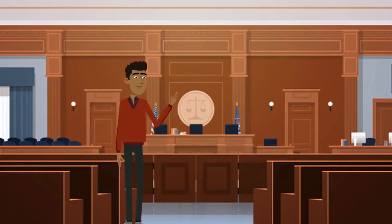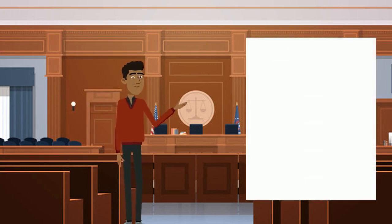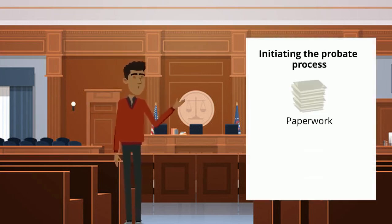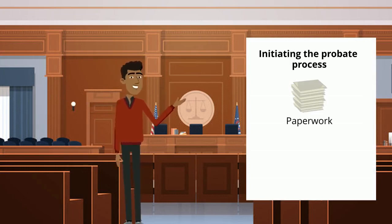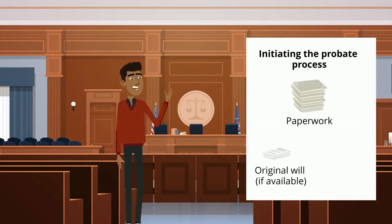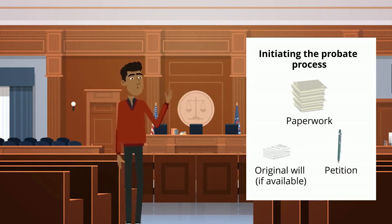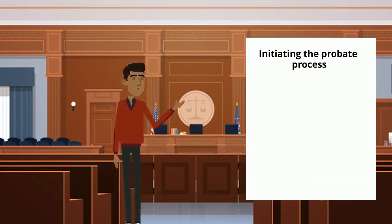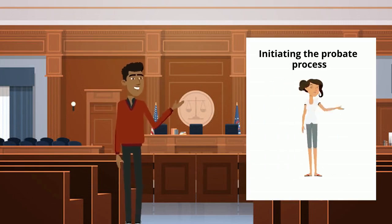The first step is initiating the probate process. This involves filing the necessary paperwork with the probate court, which may include the original will if available, and a petition to be appointed as the personal representative. If there is no will, the court will appoint an administrator.